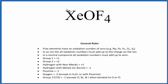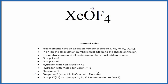To find the oxidation numbers for each of the elements in XeOF4, we'll use these rules and a periodic table. Looking at the elements, xenon is not in our list of rules. We do see that oxygen is almost always a minus two, although sometimes with fluorine it can be a minus one. Fluorine is in group 17 and has a minus one charge.